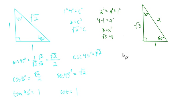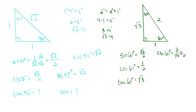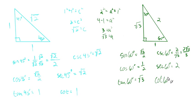Now we can read off the trig values. The sine of 60° is opposite over hypotenuse = √3/2. The cosine of 60° is adjacent over hypotenuse = 1/2. The tangent of 60° is opposite over adjacent = √3/1 = √3. The cosecant is the reciprocal of sine: 2/√3, which rationalizes to 2√3/3. The secant is the reciprocal of cosine: 2. And the cotangent is 1/√3, which rationalizes to √3/3.